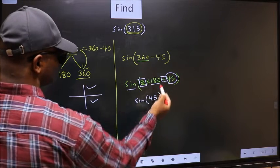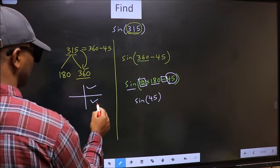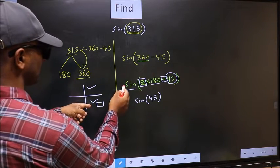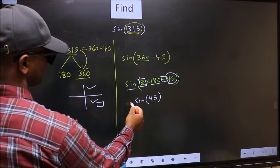Here we have negative. That means the angle lies in the fourth quadrant. And in the fourth quadrant, sin is negative. So we should put negative.